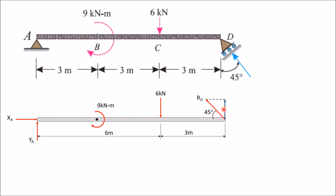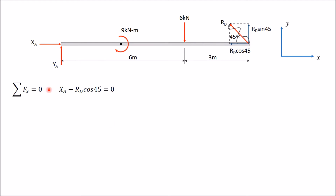Resolve Rd into horizontal and vertical components: Rd sin 45 (vertical, opposite side) and Rd cos 45 (horizontal, adjacent side). Once you resolve Rd into two components, cancel the original Rd. Now all forces are along X and Y directions. Assume positive X and positive Y directions. Applying sigma Fx = 0: XA is in positive X direction and Rd cos 45 is in negative X direction, so XA minus Rd cos 45 = 0, giving XA = Rd cos 45.